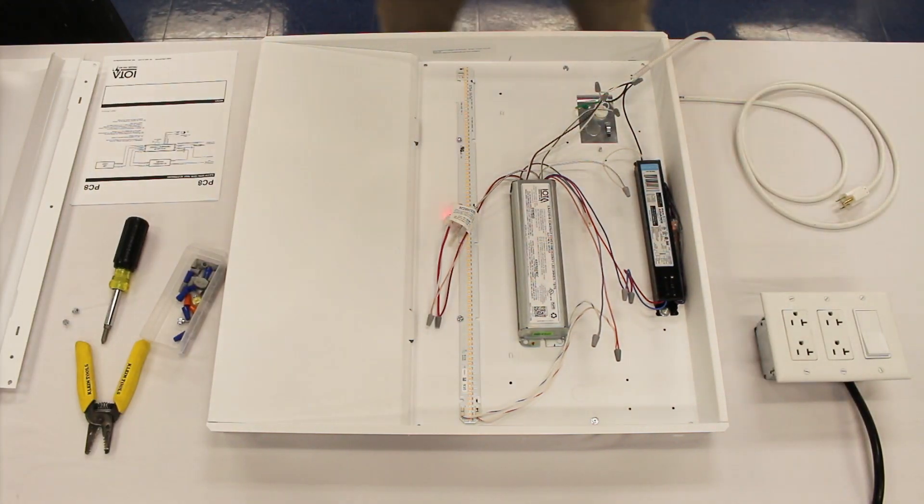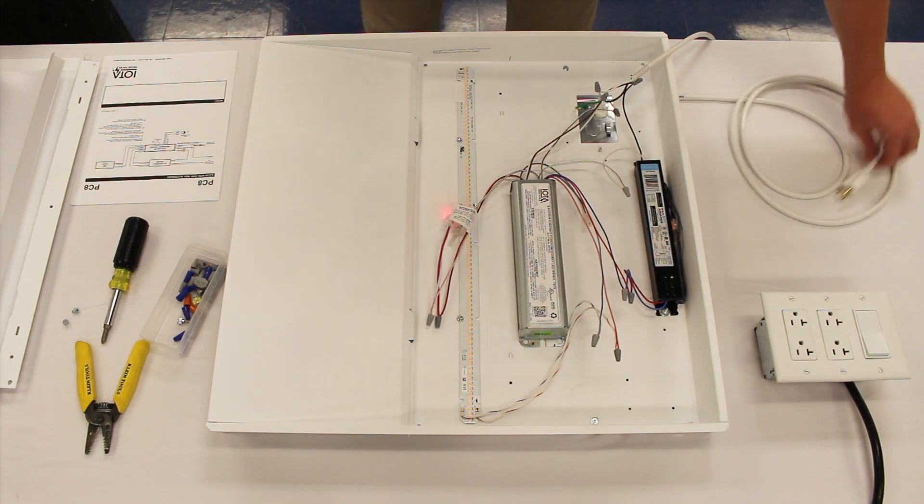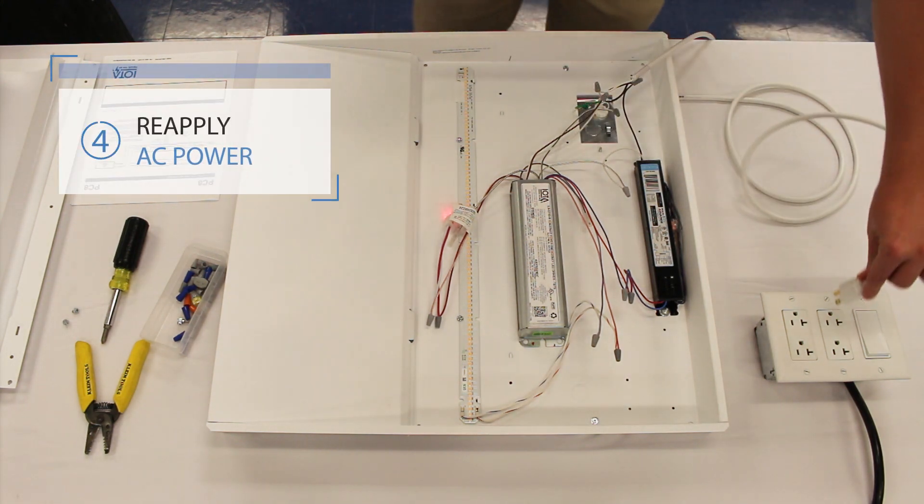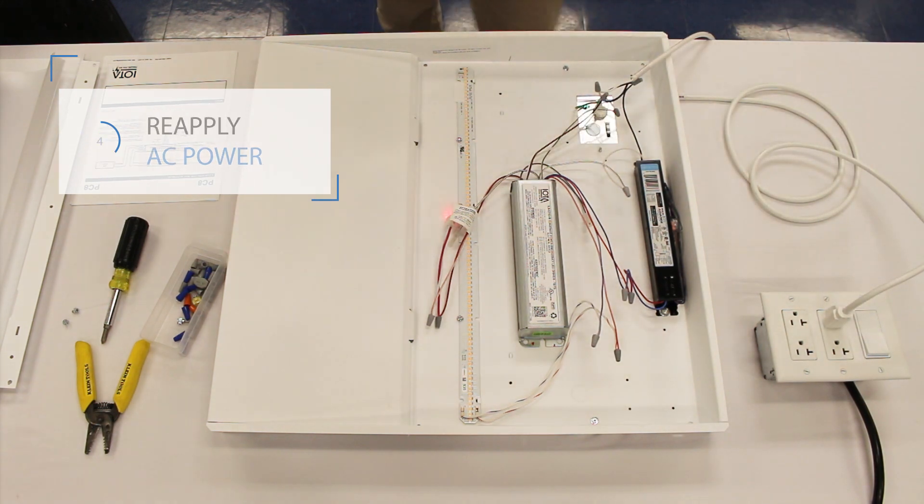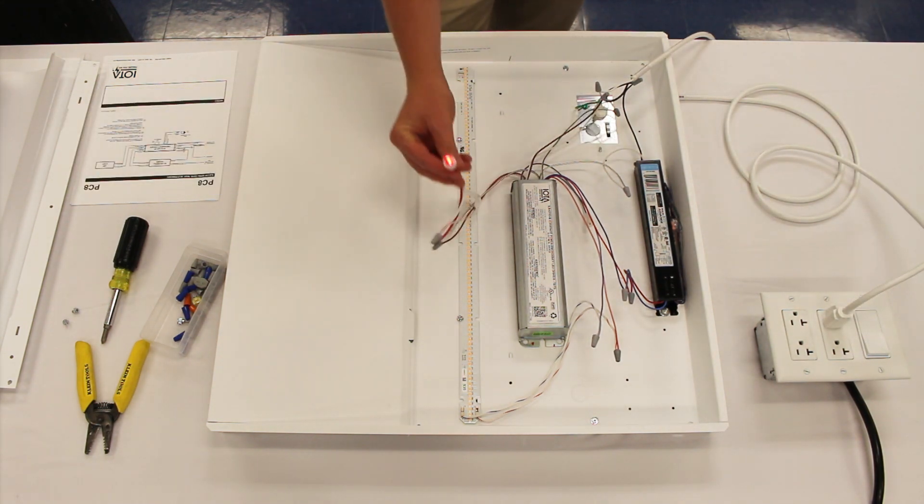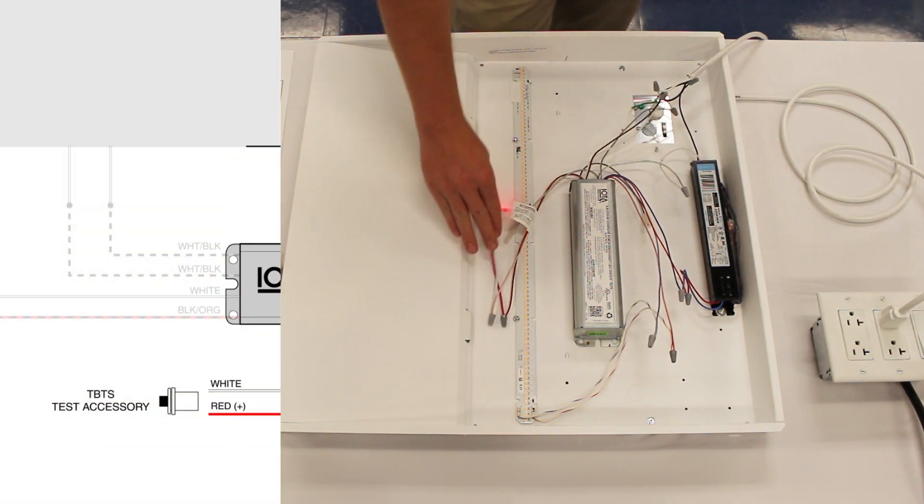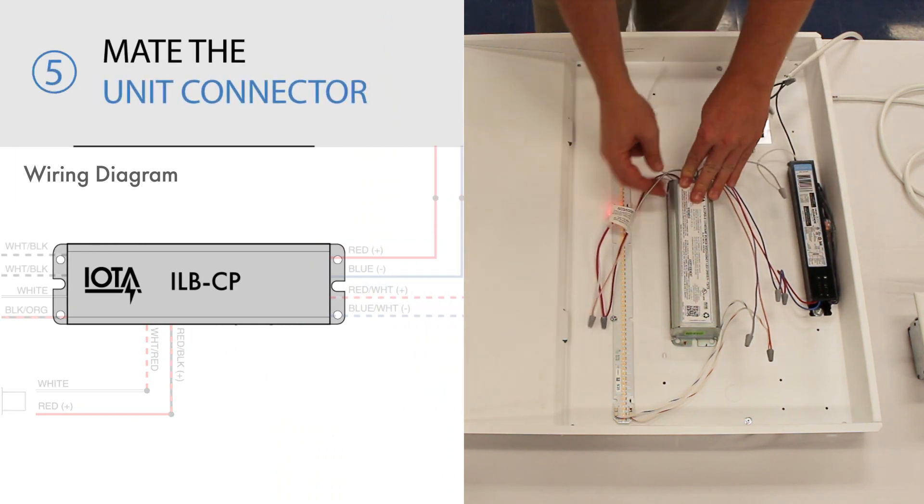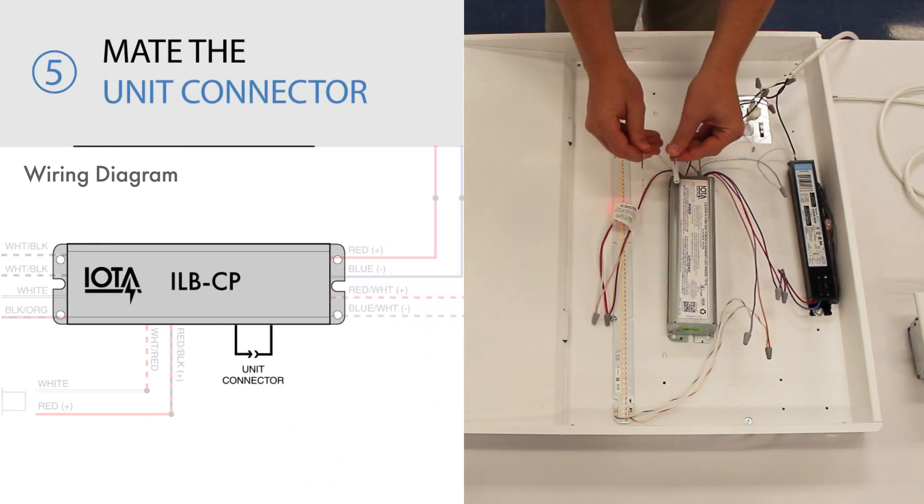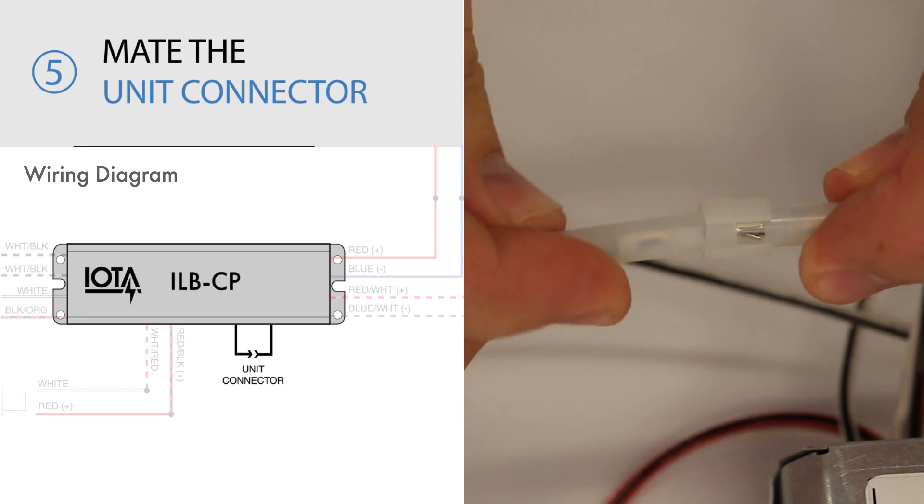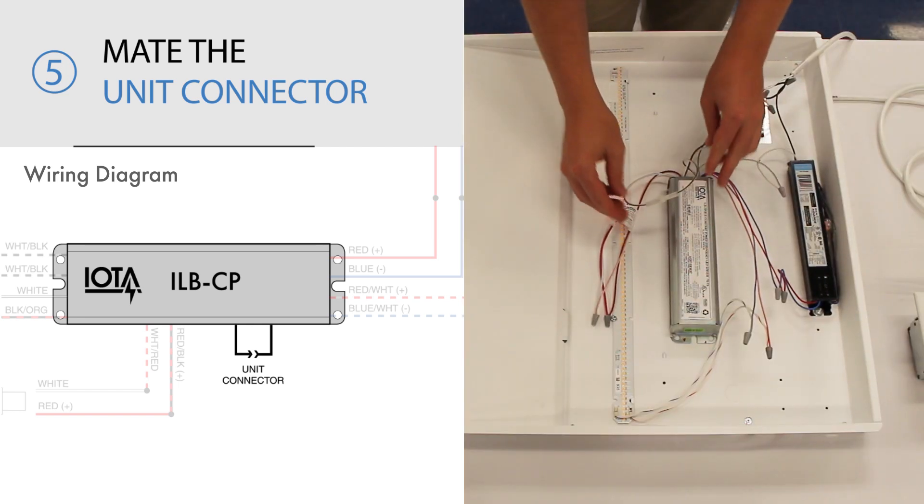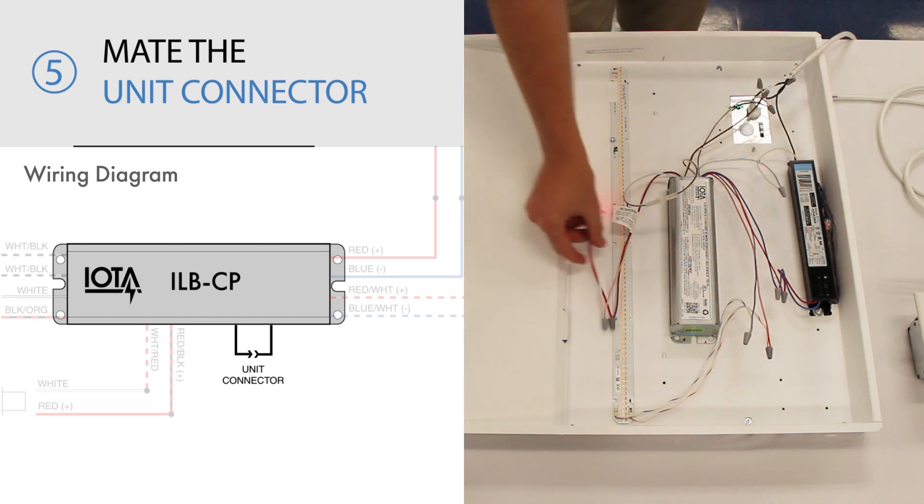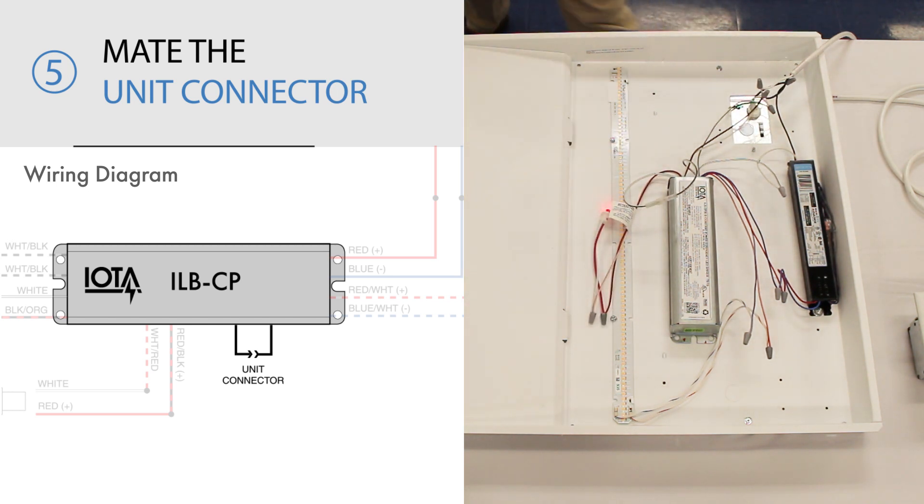The wiring of your ILB-CP unit is now almost complete, and at this point you may reapply AC power to your fixture. Once AC power has been reapplied, the very last step is to mate the ILB-CP's unit connector. Note, be sure to not mate the unit connector until permanent AC power has been applied to your fixture, or you will begin to drain the ILB-CP's internal batteries and may hinder its proper emergency operation.